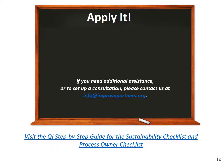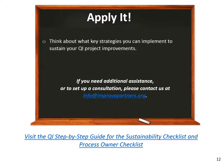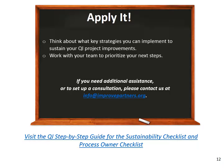Now let's try it. Think about what key strategies you can implement next to sustain your QI project improvements. Work with your team to prioritize your next steps. Perhaps your first step is to determine a process owner if you haven't done so already. I encourage you to use the provided link below to check out the Quality Improvement Step-by-Step Guide for links to the Sustainability Checklist and Process Owner Checklist. If you need additional assistance, please contact us at info@improvepartners.org for a consultation. Thanks for listening!